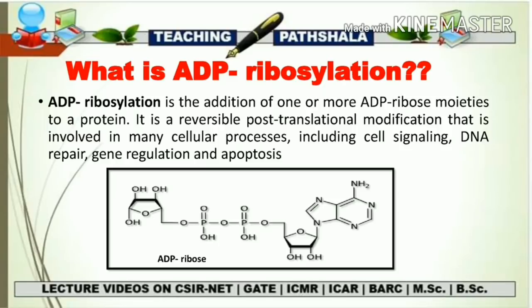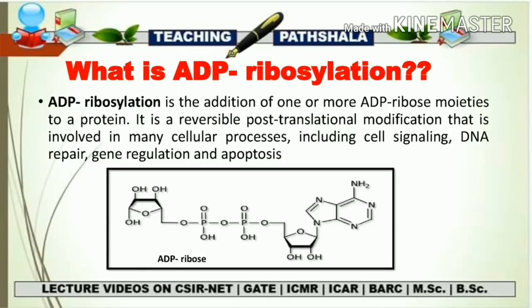ADP ribosylation is the addition of one or more ADP ribose moieties to a protein. It is a process in which there is an addition of ADP ribose that binds on a particular protein, and this whole process is known as ADP ribosylation. From the figure you can see the structure of ADP ribose: ADP binds with a ribose sugar to give the overall ADP ribose structure. This ADP ribose molecule sitting on a protein leads to the process called ADP ribosylation. Its functions include post-translational modification and involvement in cellular processes like cell signaling, DNA repair, gene regulation, and apoptosis.